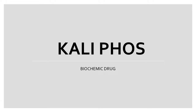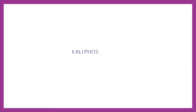In this video we are going to be talking about Caliphos, which is a biochemic drug. We started the biochemic series a long time ago and there is a playlist — you can click on the 'i' button to check it out. So Caliphos is a mixture of Kali as well as Phos, but it retains a few individual properties of each element. Let's see what the properties of Kali and Phos present in Caliphos are.